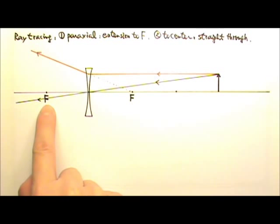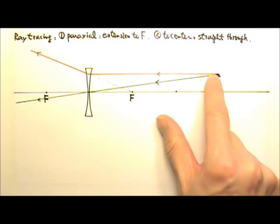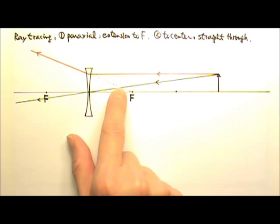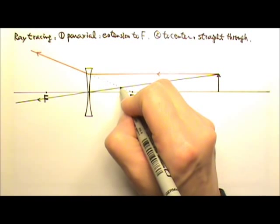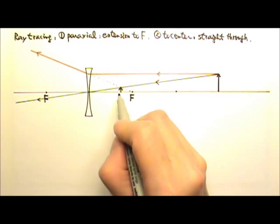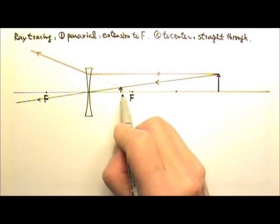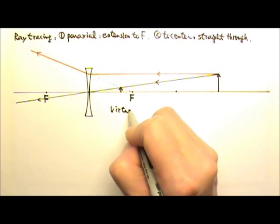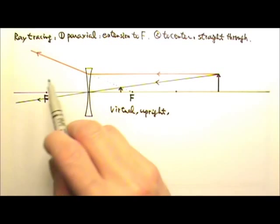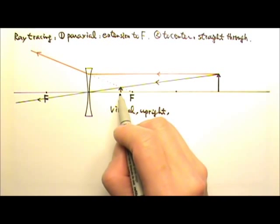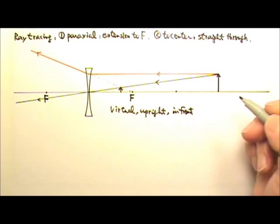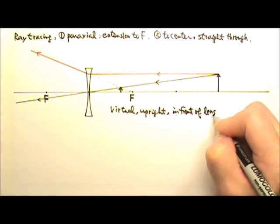These two rays are never going to meet to form a real image. However, this ray here would meet with that ray's extension over there. And that's where our image is. So we would have an upright small image in front of the lens. Because it is formed by the ray extension, this is a virtual image. See this virtual image is upright. And because the lens lets light go through, the virtual image will be at the same side as the object. So the image is in front of the lens, on the same side as the object.